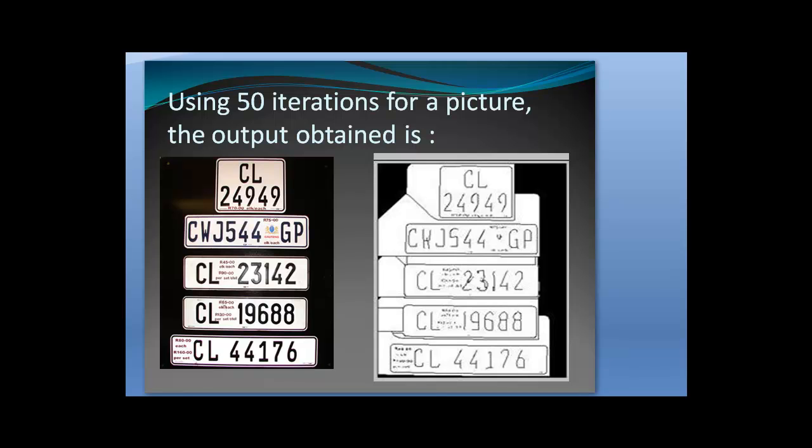Let us consider the number plates of vehicles. The data recorded over the cameras at the signals uses much memory. But if a thinned image is stored, the data could still be retrieved.